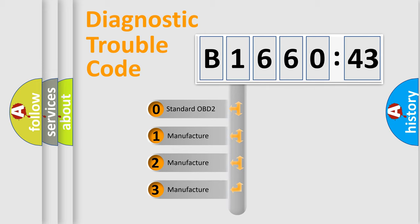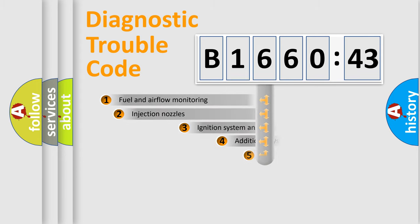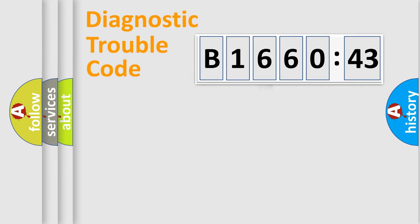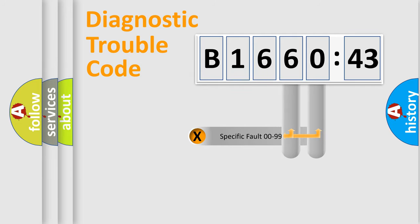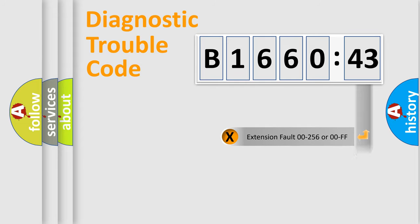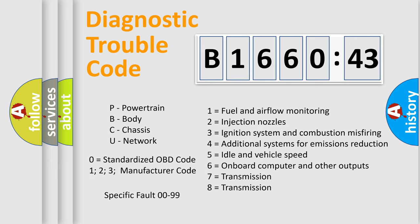This distribution is defined in the first character of the code. If the second character is expressed as zero, it is a standardized error. In the case of numbers 1, 2, or 3, it is a more manufacturer-specific expression of the car's error. The third character specifies a subset of errors. This distribution is valid only for the standardized DTC code, and only the last two characters define the specific fault of the group. The add-on to the error code serves to specify the status in more detail — for example, a short to ground. Such a division is valid only if the second character code is expressed by the number zero.